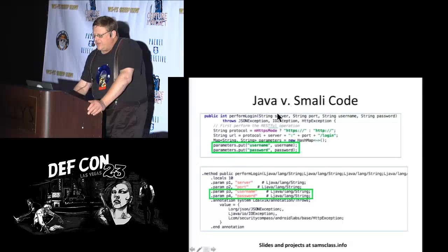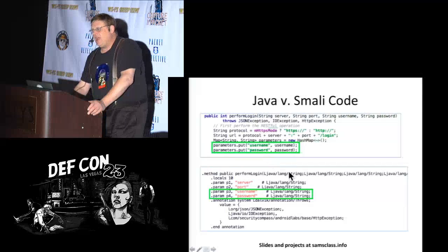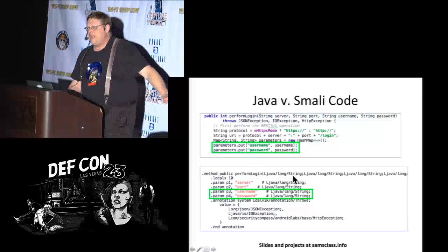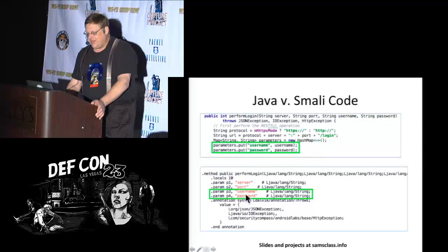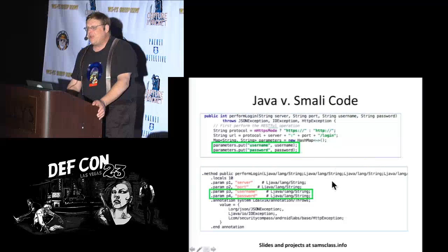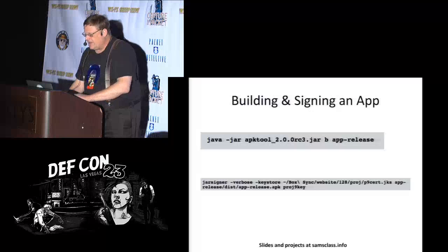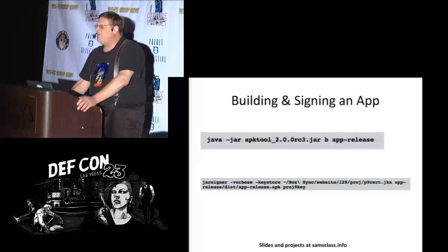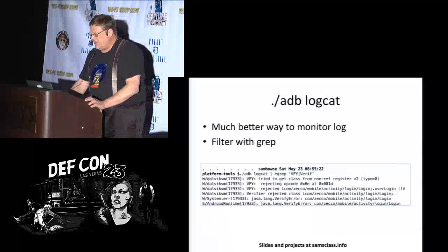Here's the difference between Java and Smali. This is what the app developer actually saw — a Java function to perform a login, with two parameters called username and password. And this is what I find by decoding the APK: Smali. 'Perform login' is still here, parameter three and parameter four are username and password. Really not much harder to read, and not much harder to modify than original Java. You can then build the app, re-sign it with your own self-signed key, put it on a phone and run it.